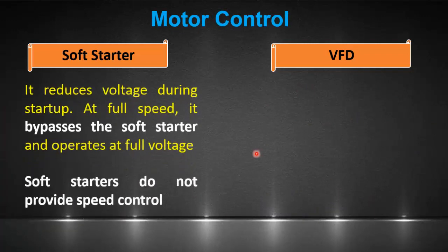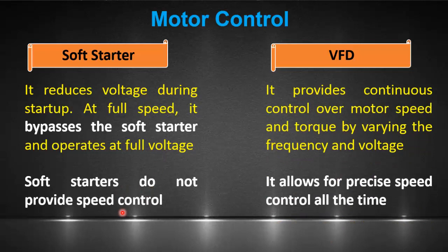A soft starter only controls the voltage supply to the motor during startup and initial acceleration. Once the motor reaches the desired speed, it bypasses the soft starter and operates at full voltage. Soft starters do not provide speed control. A VFD provides continuous control over motor speed and torque by adjusting the frequency and voltage supplied to the motor at all times, allowing for precise speed control in continuous operation.